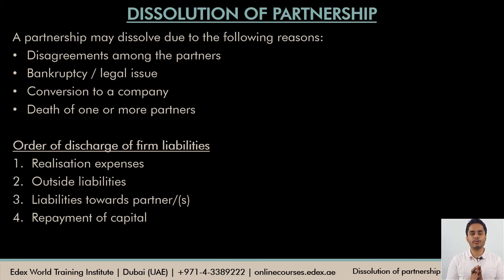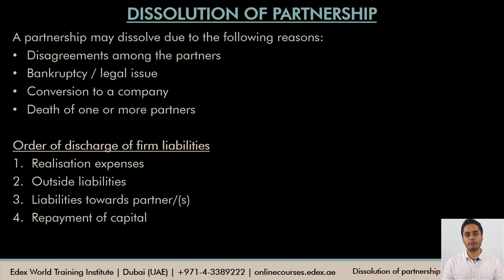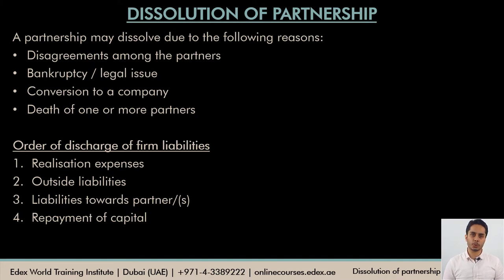After meeting these expenses, the firm will have to settle all the outside liabilities. Outside liabilities means third-party liabilities, which could be in the form of loans, trade payables, other payables, etc. Then it could be possible that a partner has advanced a loan to the firm — this is the firm's liability towards the partner. So once the outside liabilities are met, the next in the sequence is the firm's liabilities towards the partner. And after that, whatever is left belongs to all the partners based on whatever capital balances they hold.